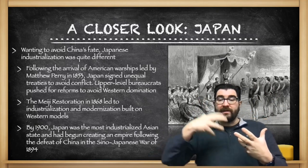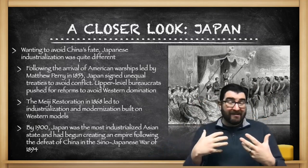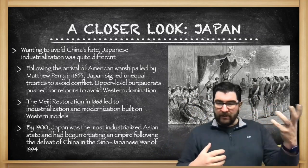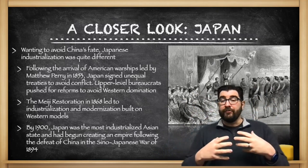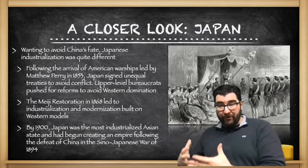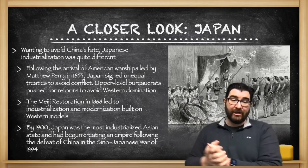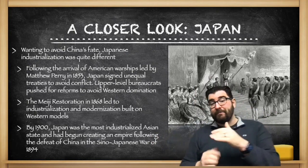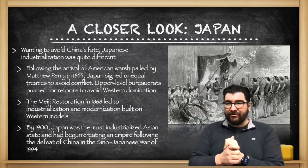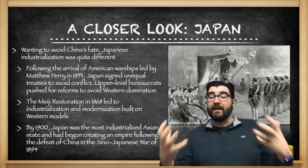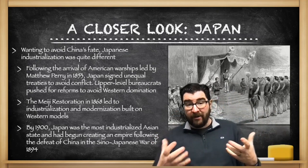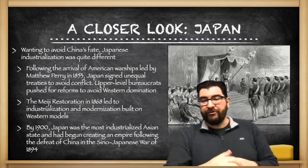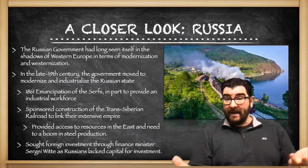The emperor now supports industrialization and modernization built on Western models. Japan will look around the world and import experts from Britain and Germany, and look to the United States to craft a modern, westernized Asian state. By 1900, Japan will be the most industrialized Asian nation, and has even begun to create an empire with the defeat of China in the Sino-Japanese War that began in 1894.